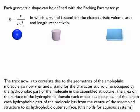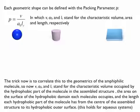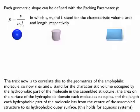The packing parameter P is defined as a certain volume divided by a characteristic area times a characteristic length. That value is correlated directly to the shape you would expect. Given the three types of shapes - a sphere, a cylinder, and a sheet - think about what P would be: what is the value for a sphere, what's the value for a cylinder, and what's the value for a bilayer? Have a go at that.